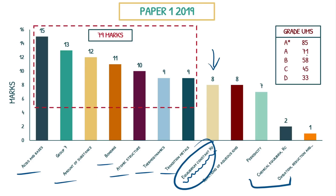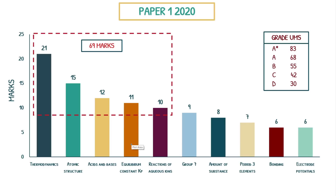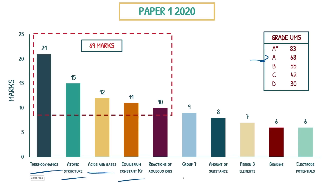In 2019, the A star was 85, A was 71, and B was 58. Each year they're slightly different — they may go slightly up or down. Notice that out of 105 marks, you can lose 20 marks and still get an A star. You don't have to be perfect. Hopefully you're seeing the pattern: our top five to guarantee an A — in this case only 68 marks — are thermodynamics, atomic structure, acids and bases, equilibrium constant Kp, and reactions of aqueous ions.